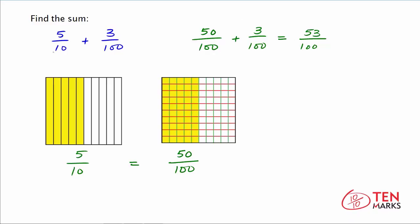And that means that 5 tenths plus 3 one hundredths equals 53 one hundredths. And we were able to do that by writing an equivalent fraction with a denominator of 100.